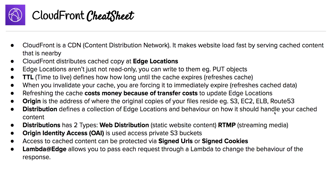There are two types of distributions: the web distribution, also just known as web, which is for static website content; and then RTMP, which is for streaming media. RTMP is a very specific protocol, though you can also serve video streaming via the web distribution.